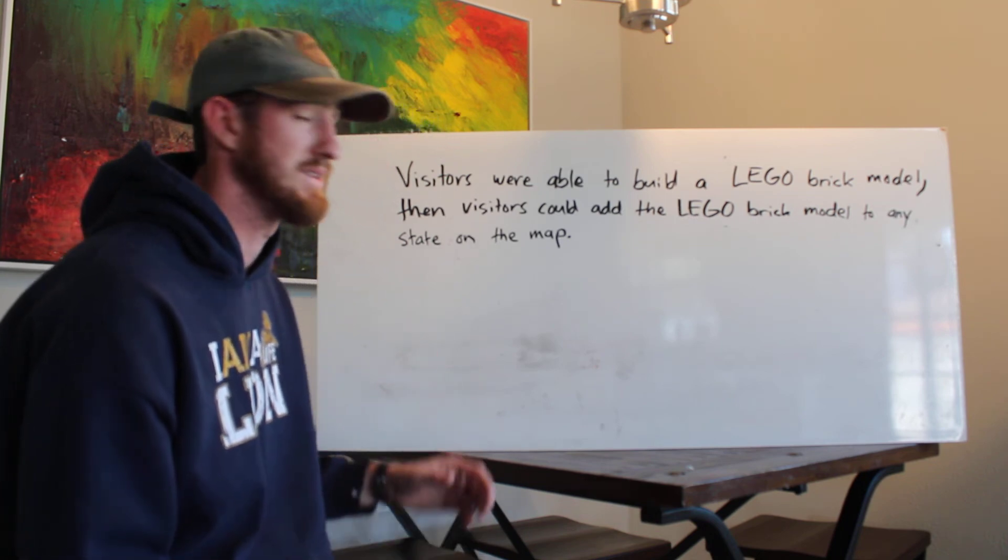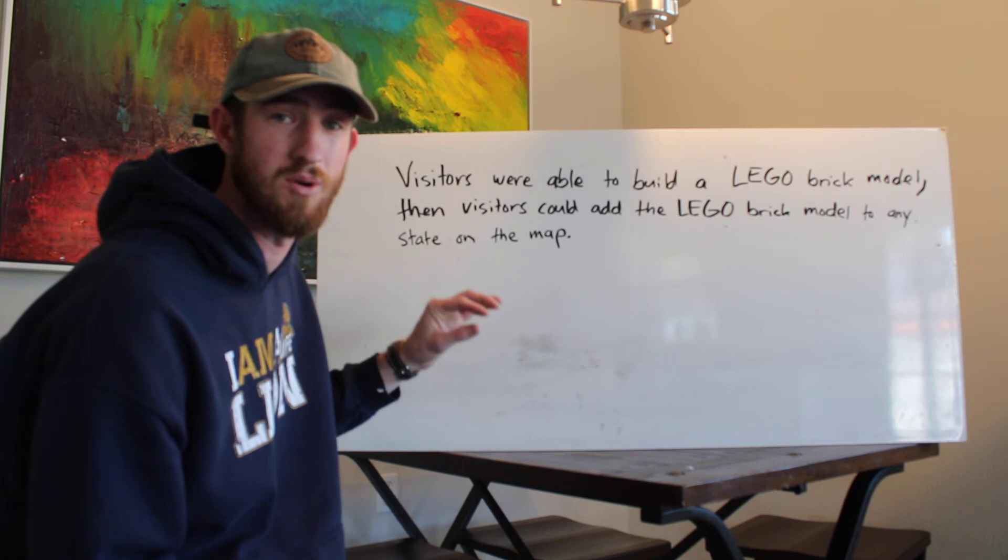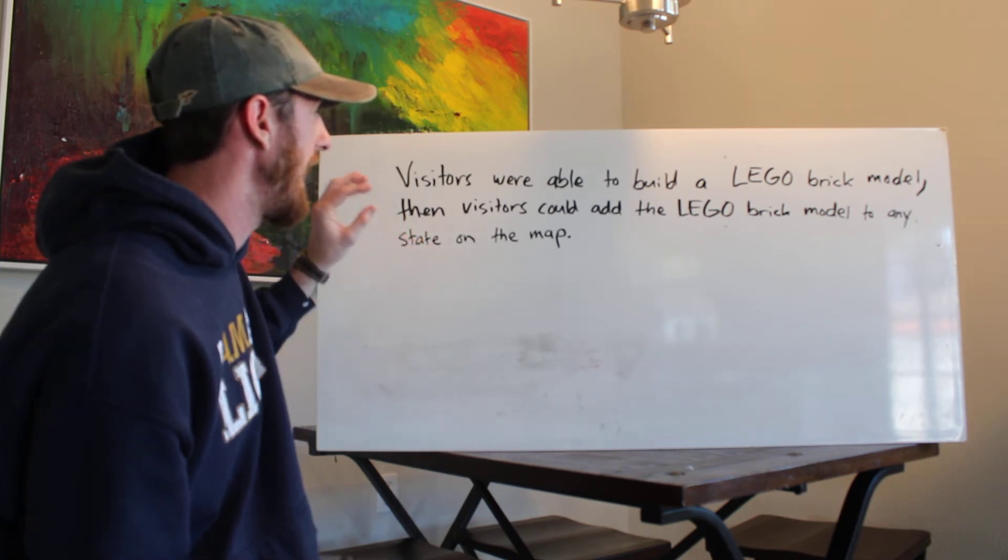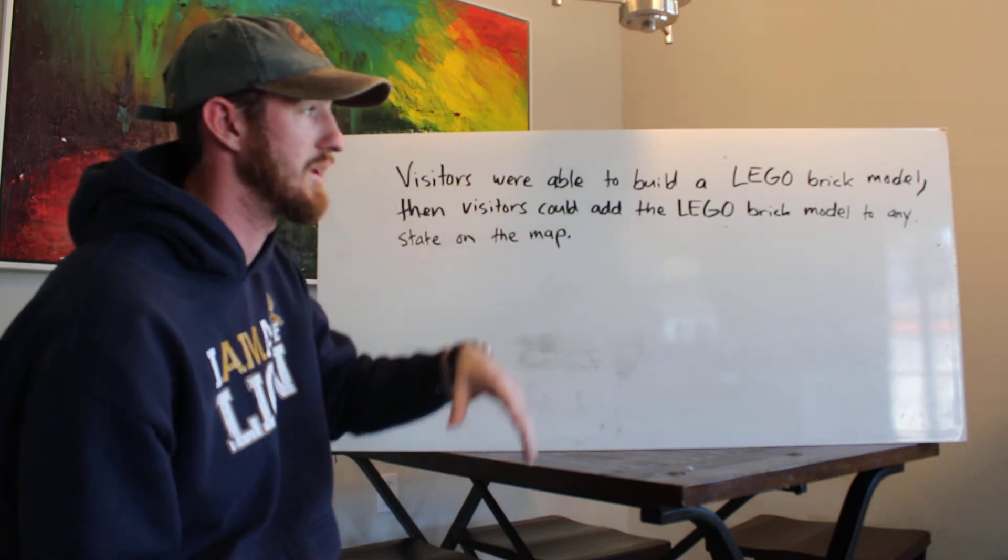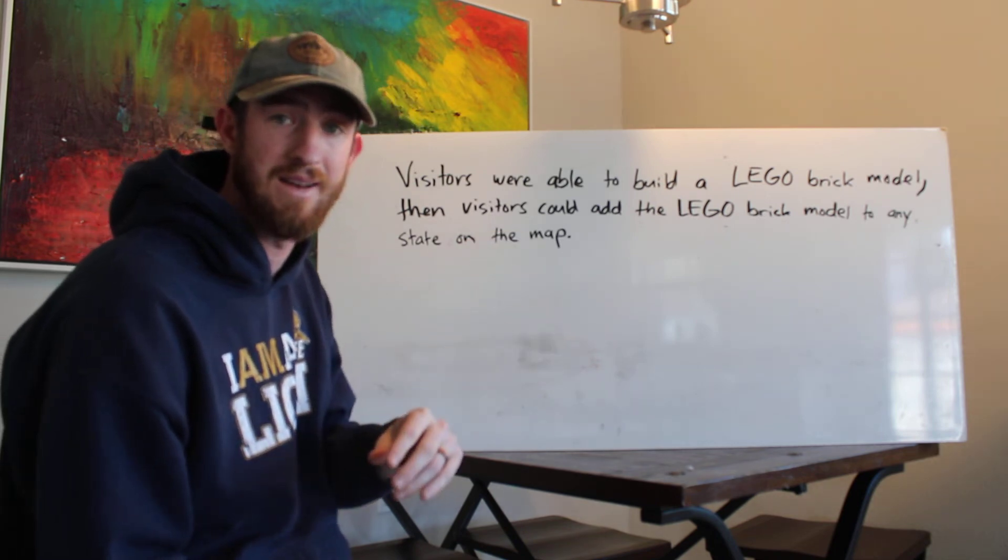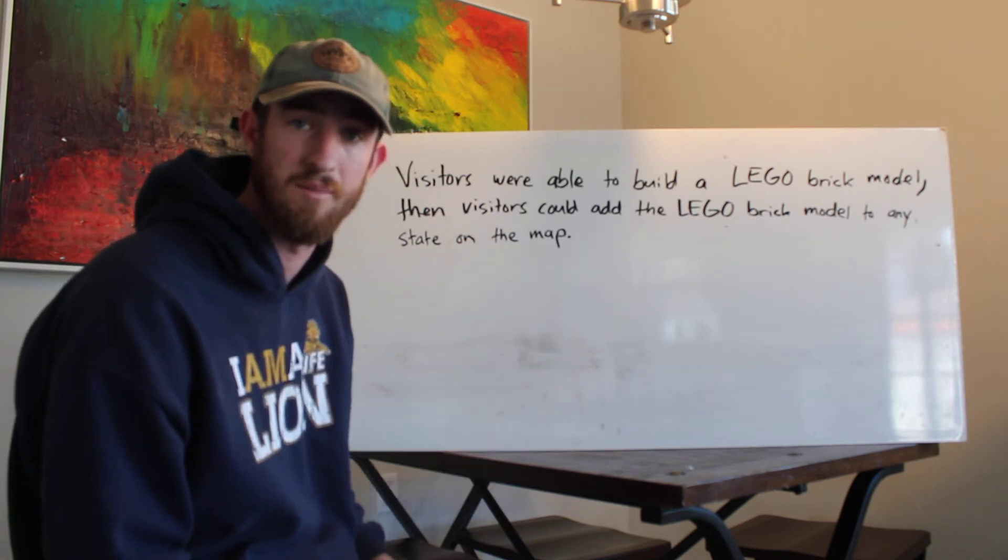The third way is to make it a complex sentence. So it might say something like, after visitors were able to build a Lego brick model, then they can add their Lego brick model to any state on the map.